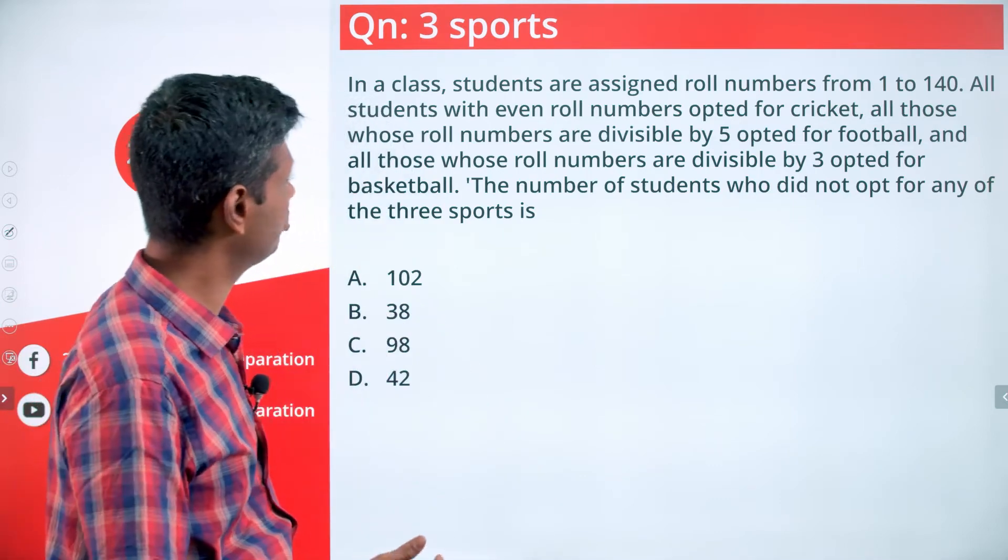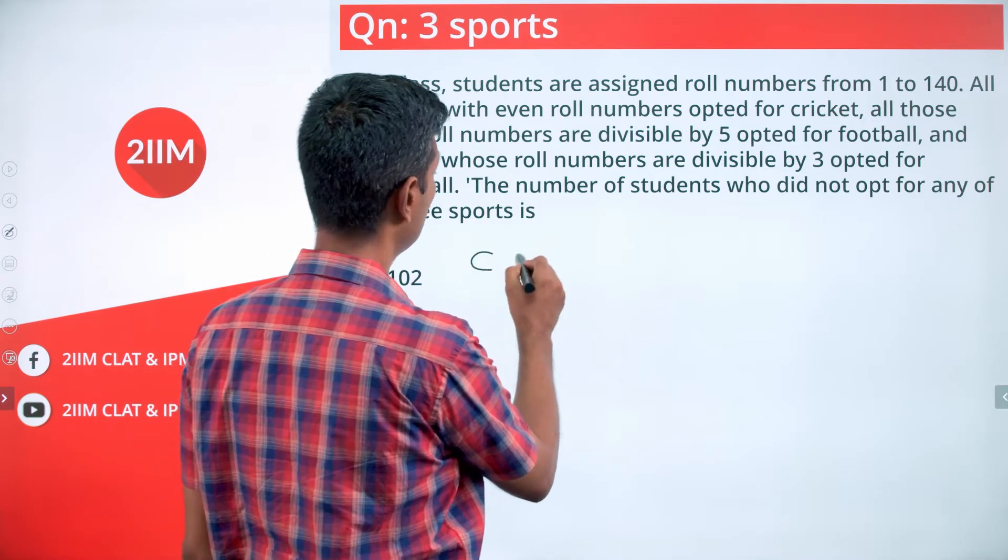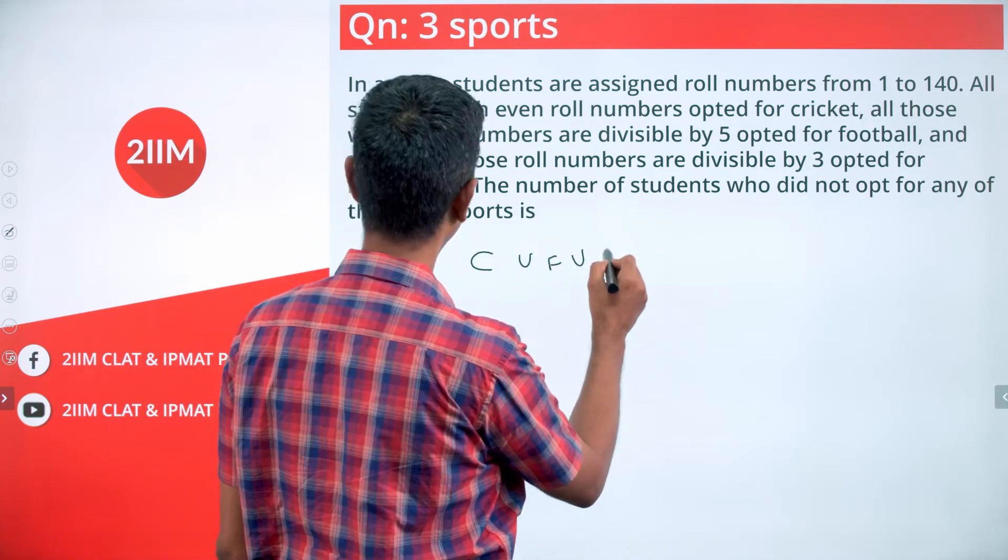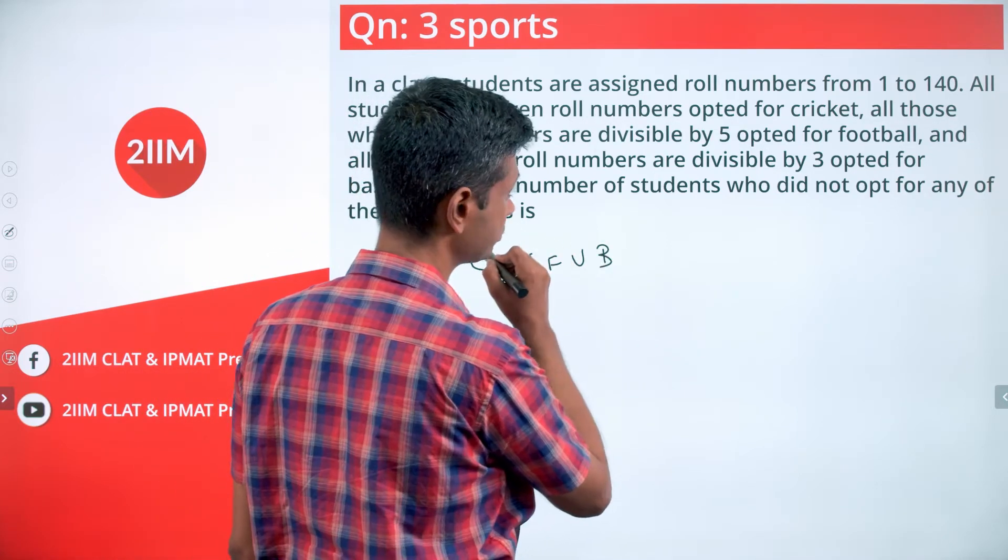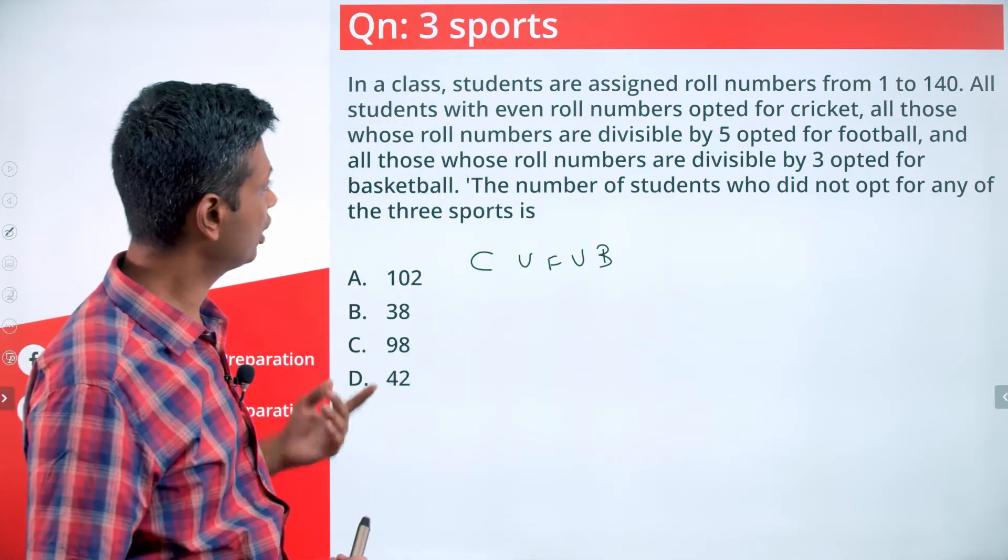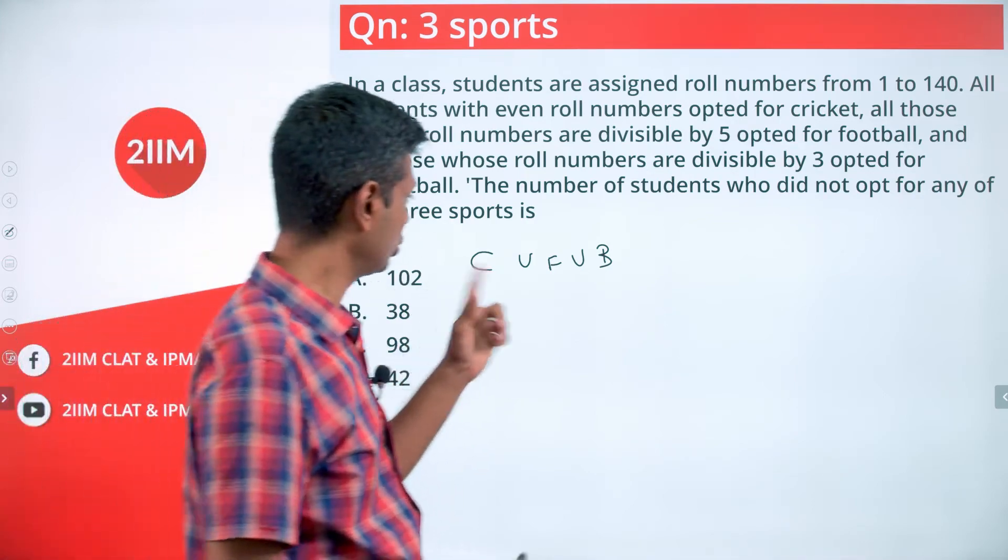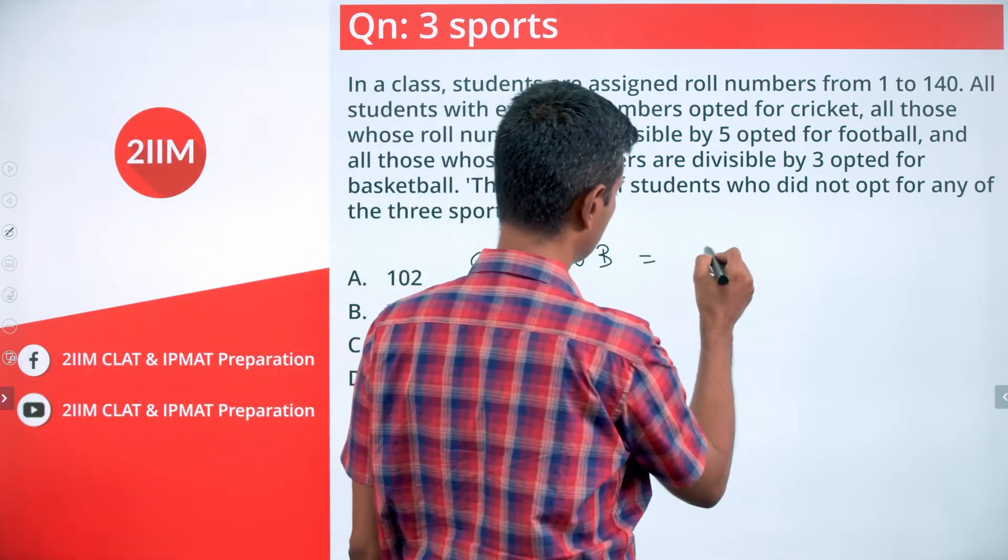We know A∪B∪C, so here we can find out cricket union football union basketball. Once we find this, 140 minus this is the answer we're looking for. We want to find the number of students who did not opt for any of the three sports.